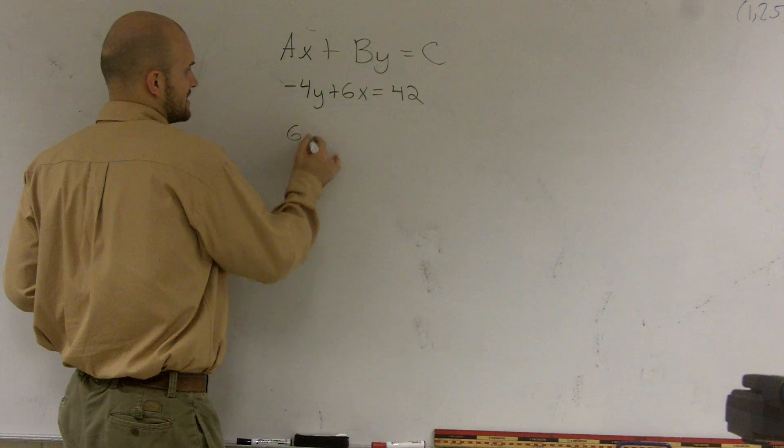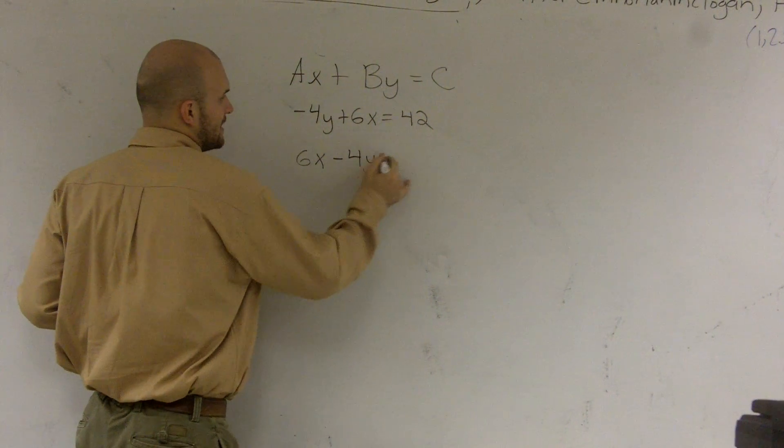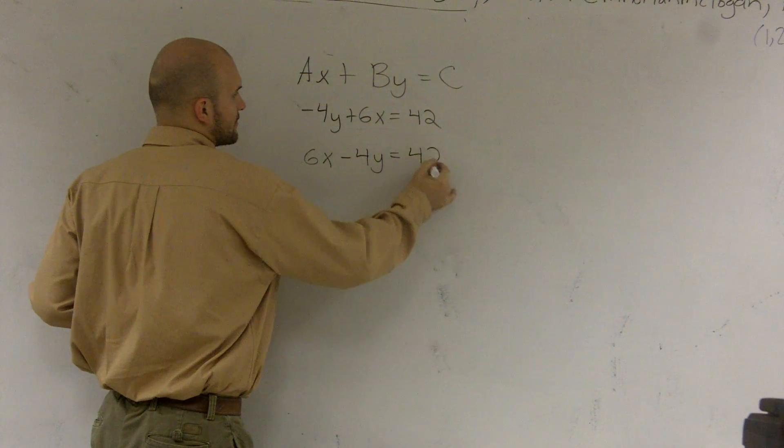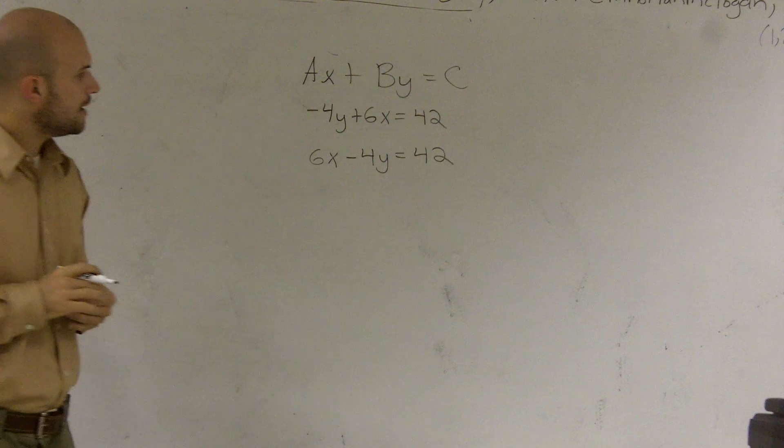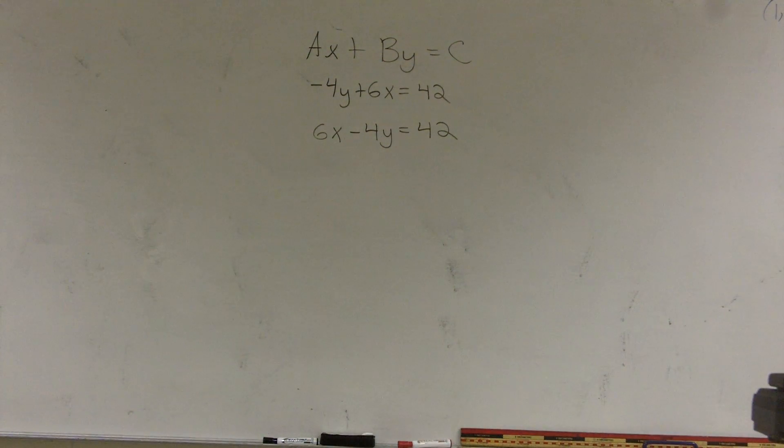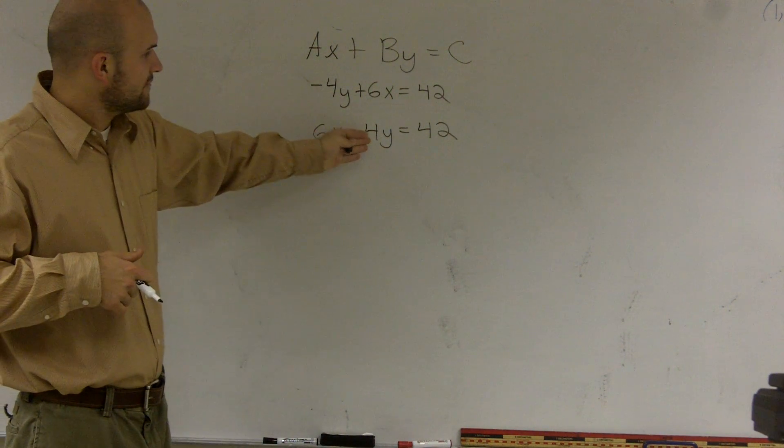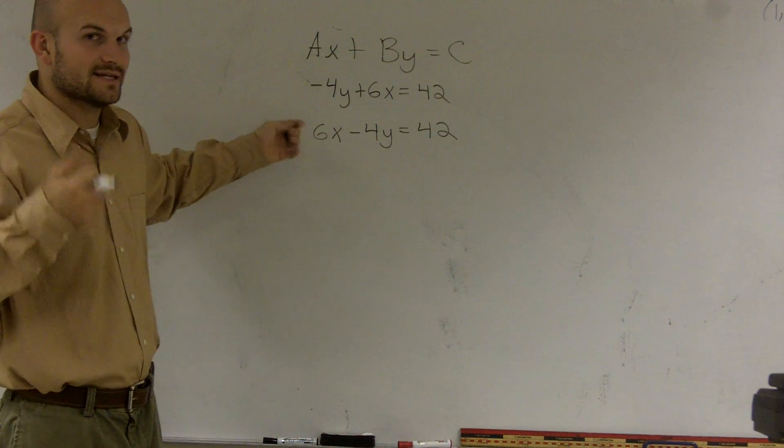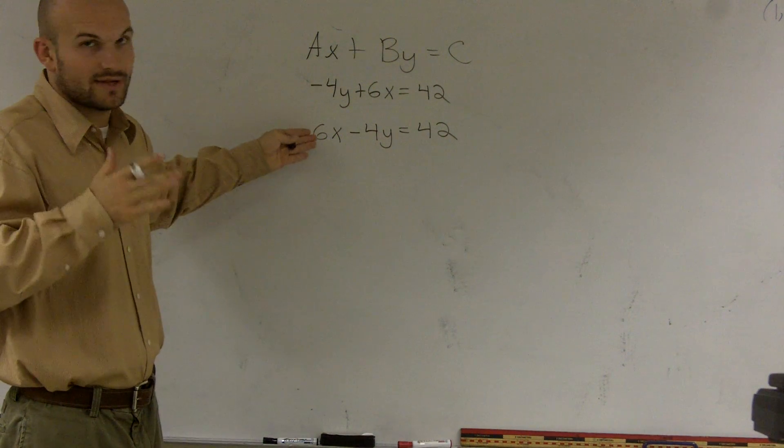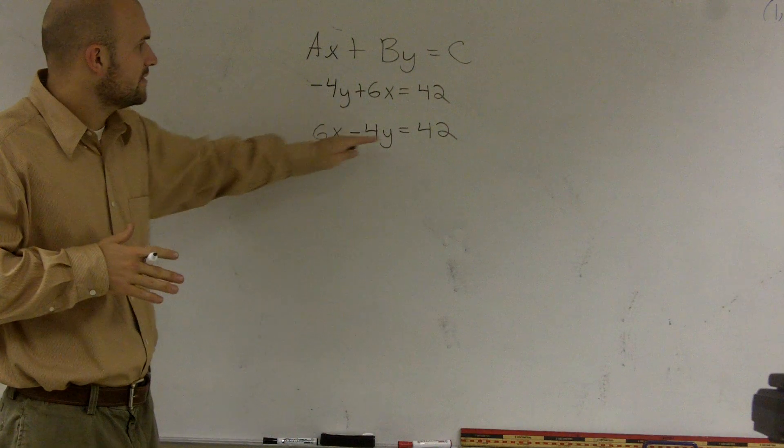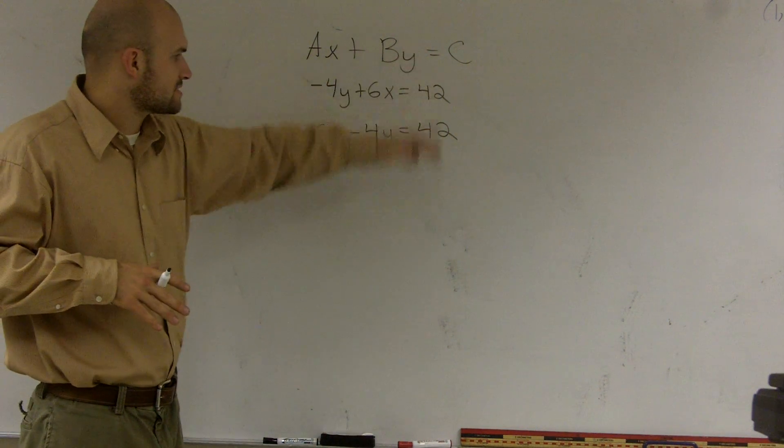But as I write this as 6x minus 4y equals 42, when I look at this problem, what I notice is my 6 is positive, which is good. My negative 4 is negative, but that's okay. As long as your a is positive, then you're good. So my a is positive, and then it's ax plus by equals c.